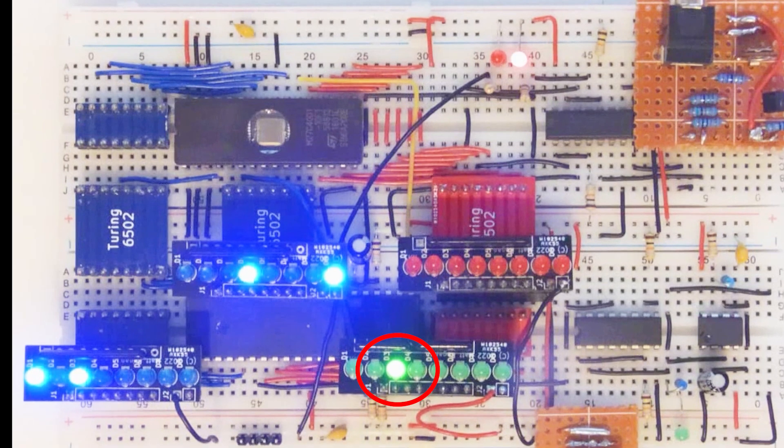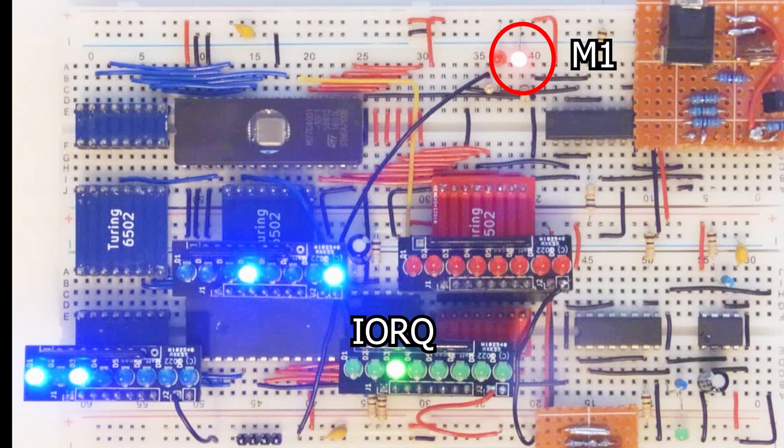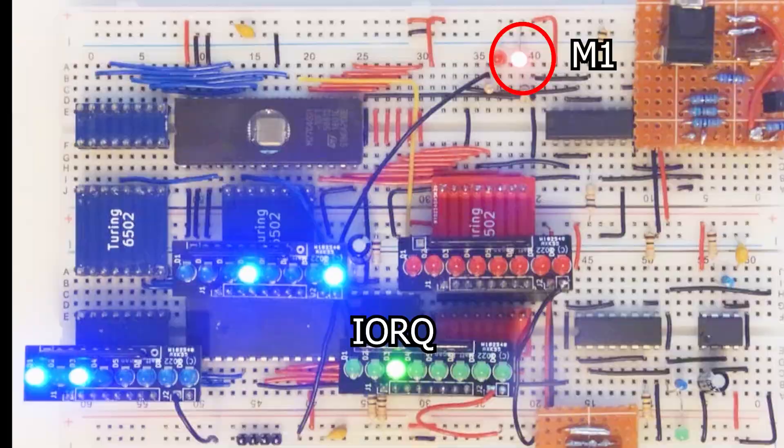Now we can see that this third LED in from the left has turned on, but I haven't labelled this so far. This green LED actually represents the IO-REC signal. You may have also noticed that the M1 cycle is active.